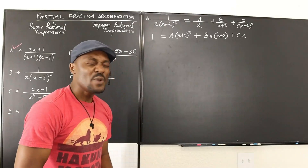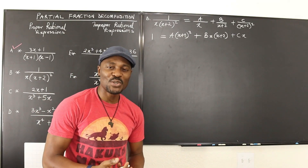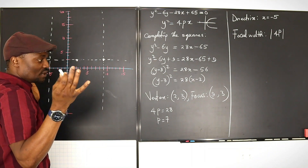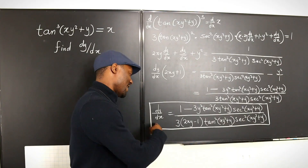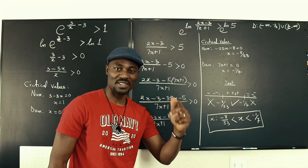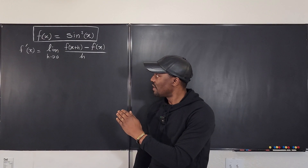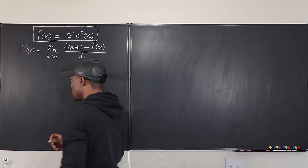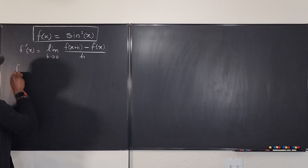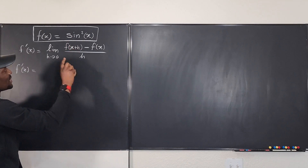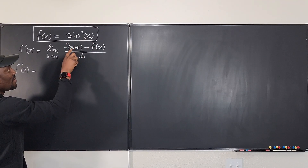Let's get into the video. We're just going to use the definition and see where it takes us. So we're going to say that the derivative f prime of x will be equal to — we're going to apply this, so the only thing that changes is x becomes x plus h.